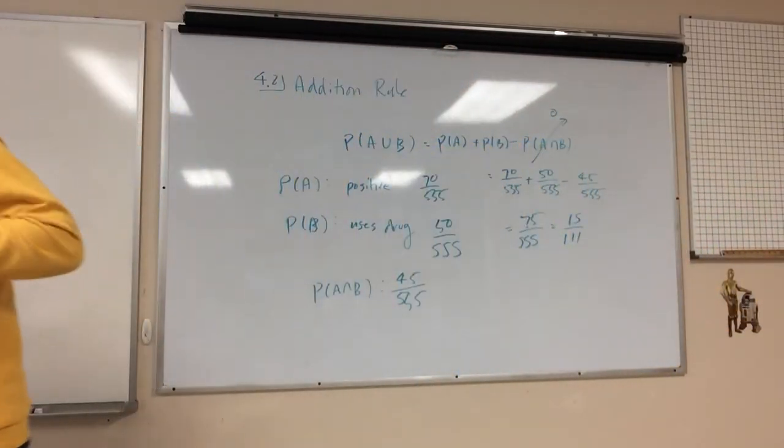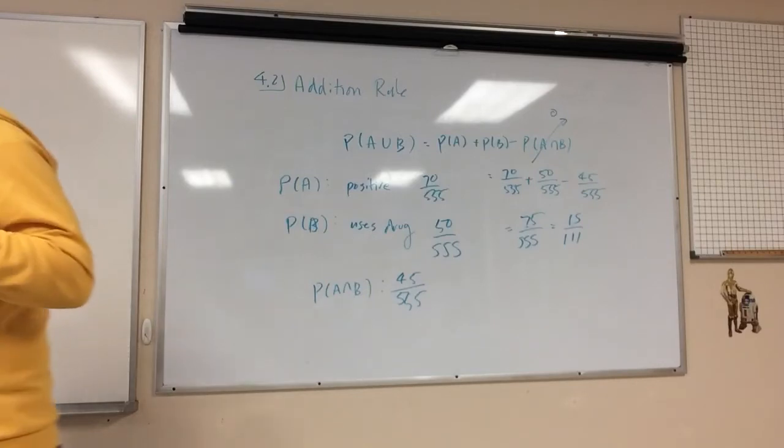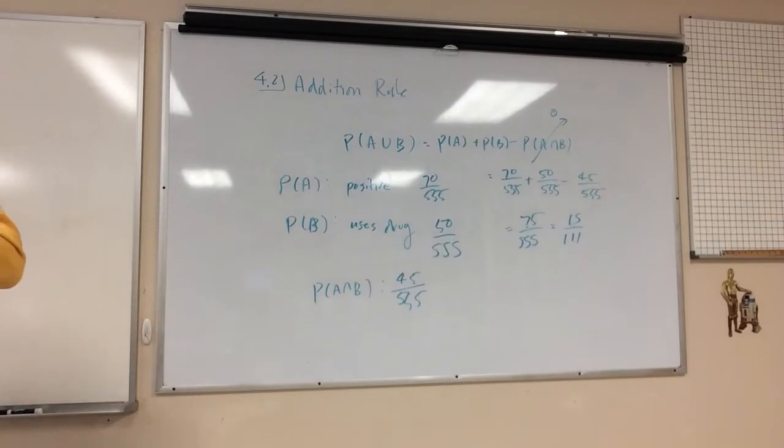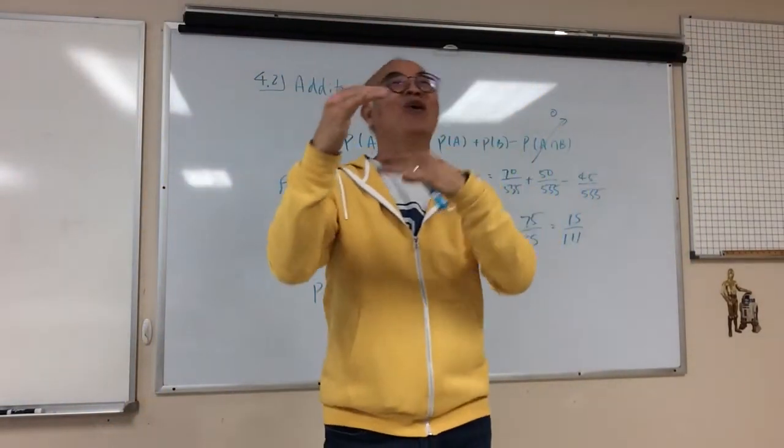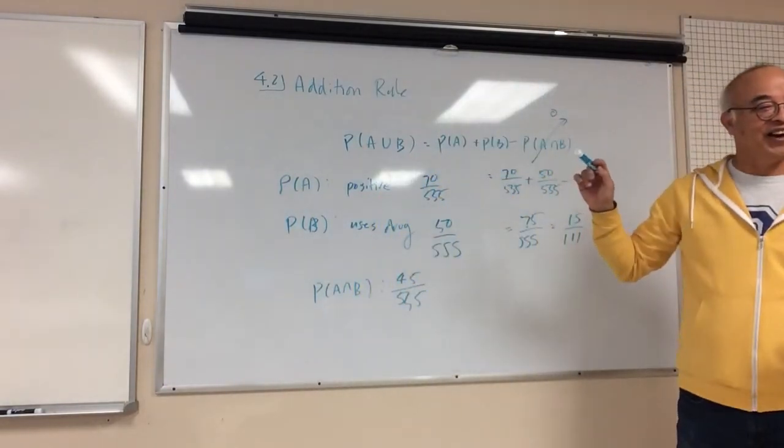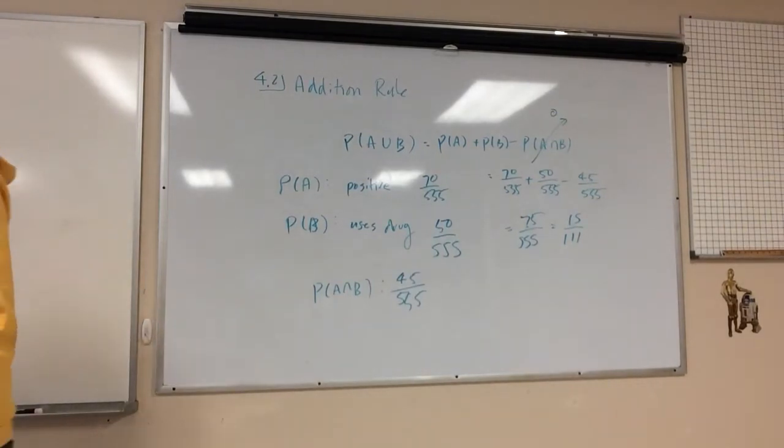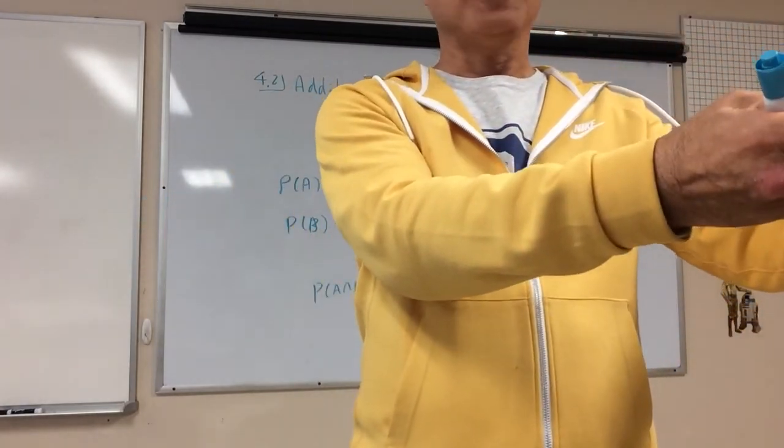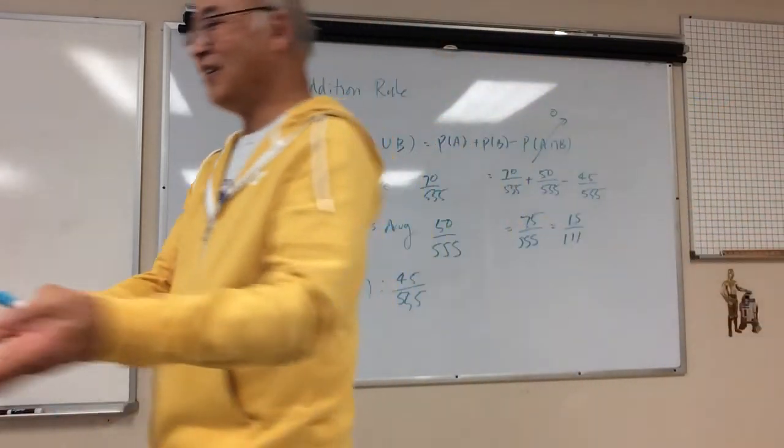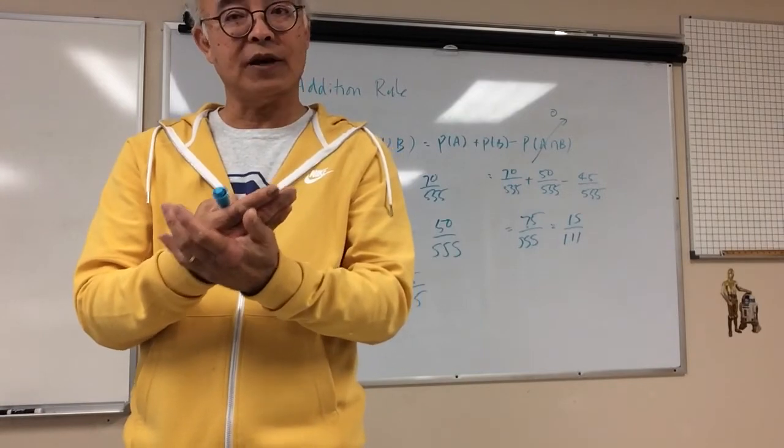So let's look at some of those examples. Disjoint event, example number two. Event A, randomly selecting someone from the clinical trial who is a male. Event B, randomly selecting someone from a clinical trial who is a female. You can't be both. And we're not going there. So this is going to be zero. Events that are not disjoint. Randomly selecting someone taking a statistics course, randomly selecting someone who is a female. We have living proof that these are not mutually exclusive. These people are female and they're taking a statistics course. So this is not a mutually exclusive event.